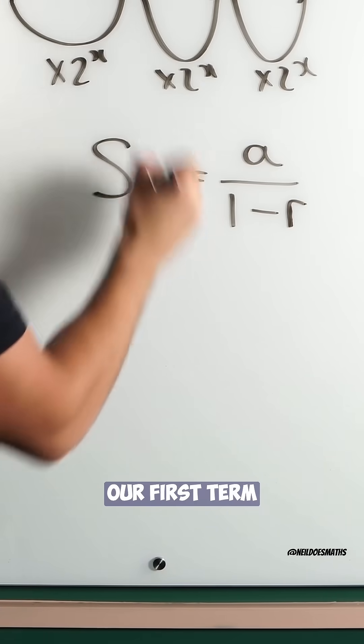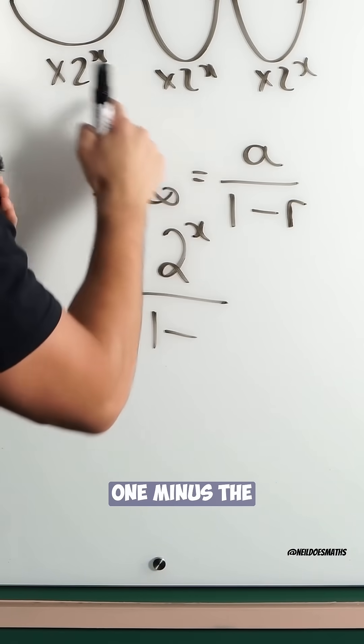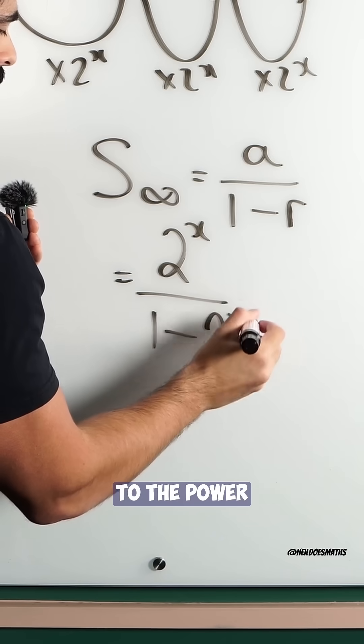In this case, our first term is 2 to the power of x divided by 1 minus the common ratio, which is also 2 to the power of x.